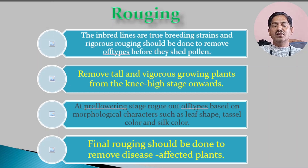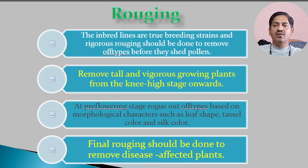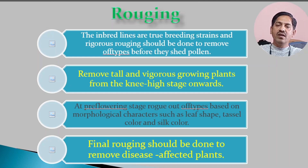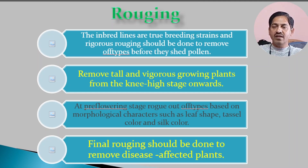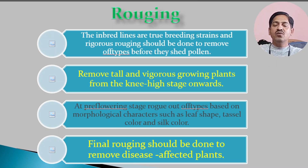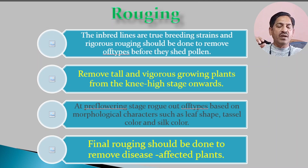When doing roguing in hybrid seed production, if the majority of plants flower at 50 days but some plants are flowering at 35 to 40 days, those early flowering plants must be removed. Similarly, if the majority flower at around 60 days and some are flowering earlier or later than the majority, those off-type plants must also be rogued out.